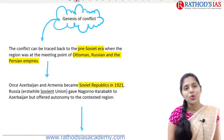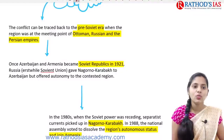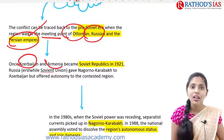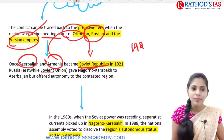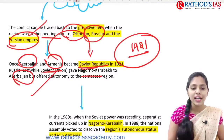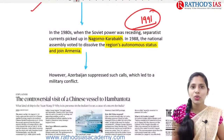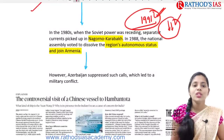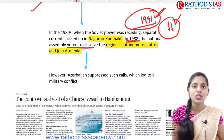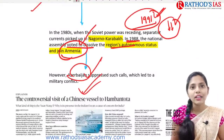Regarding the background of this conflict, it is traced back to the pre-Soviet era, when this region was at the meeting point of the Ottoman, Russian, and Persian empires. Once Azerbaijan and Armenia became part of the Soviet Republic in 1921, the Soviet Union gave the Nagorno-Karabakh region to Azerbaijan. In the 1980s, Soviet power was receding, and with the disintegration of the USSR in 1991, there were uprisings in the region. In 1988, the national assembly voted to dissolve the region's autonomous status and join Armenia, but Azerbaijan did not accept this, leading to military conflict.